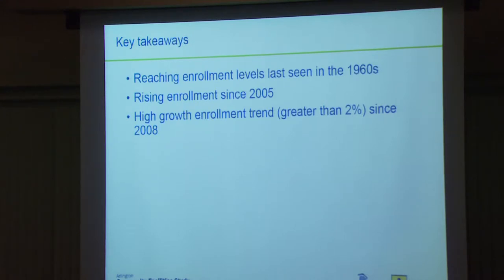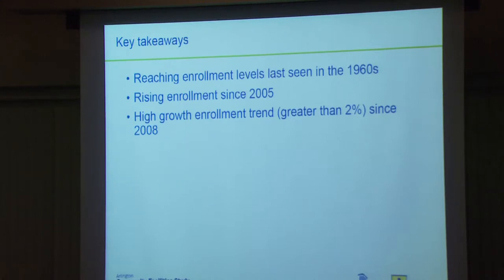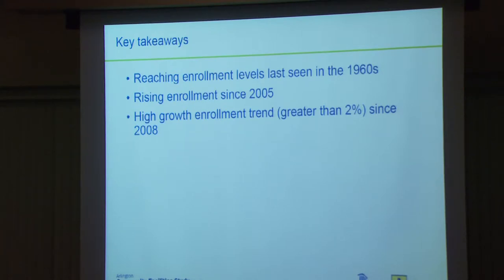Some key takeaways: APS is getting back to where we were in the 60s — for those relatively new to Arlington, this may have seemed like a new phenomenon, but Arlington is returning to where it was before. We've had rising enrollment since 2005, and what I call high-growth enrollment since 2008. Most school systems consider 2% annual growth to be high. Last year we grew over 5%, which is really, really high growth — and I don't think that's sustainable. The year prior we grew well over 3%, so we're much higher than most areas in the country.